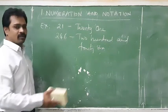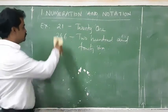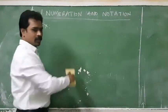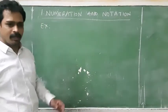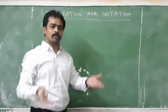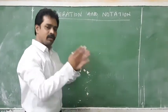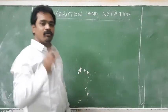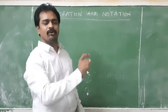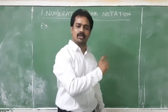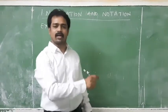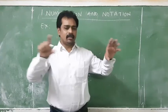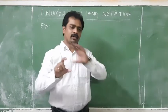And now, after that, we have place value. A place value is the position of the number — a number's position. Place value: ones, tens, hundred, thousand, ten thousand, lakhs, ten lakhs, crores, ten crores. Like that, we have place value.